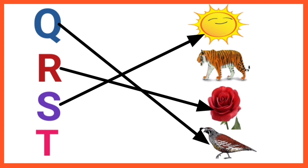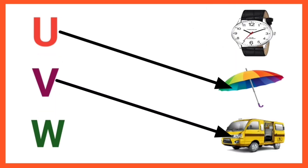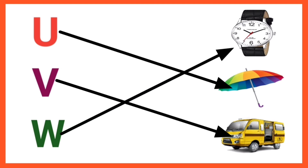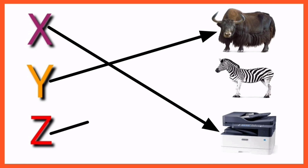S for sun, T for tiger, U for umbrella, V for van, W for watch, X for xerox, Y for yak, Z for zebra.